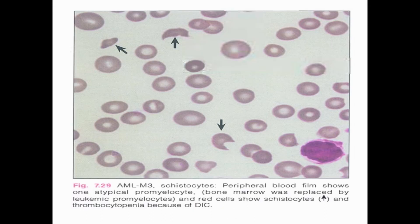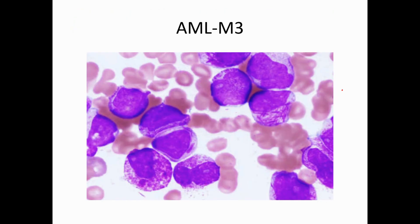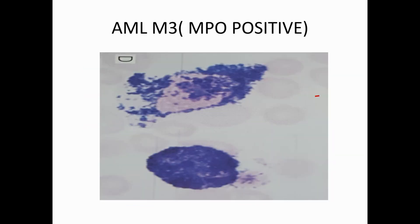Bone marrow is hypercellular with prominent promyelocytes. Schistocytes (fragmented RBCs) in AML M3 indicate DIC — a medical emergency. Looking at the cells: these are faggot cells — multiple Auer rods in the cytoplasm. Note thick Auer rods in the cytoplasm, multiple cytoplasmic granules, size more than 20 microns, and prominent nucleoli. Morphology is very important — AML M3 is the only leukemia easily diagnosed morphologically.